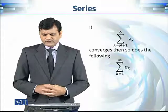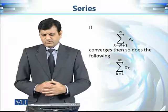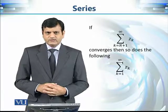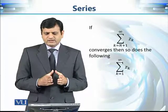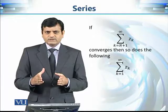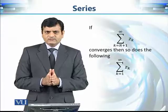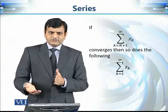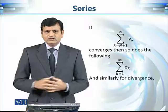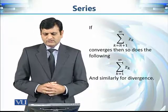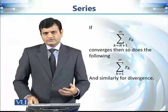In other words, if the series of z_k where k varies from N+1 to infinity, where N is any finite number — it can be one, hundred, million, billion, or trillion — if this series converges, so does the series from k equals 1 to infinity of z_k. If we start adding the terms after some capital N and that is convergent, then the actual series is convergent. Similarly, if the tail series is divergent, then the full series is also divergent.